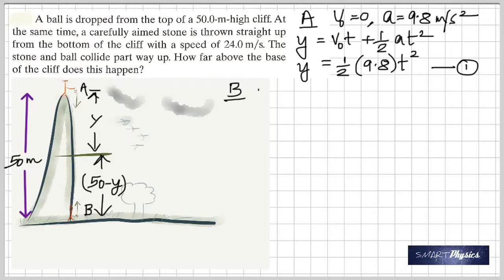It also travels for the same amount of time, t seconds, by the time both of them meet each other. So initial velocity is 24 meters per second, a is minus 9.8 meters per second squared, and we can use the same equation as before.